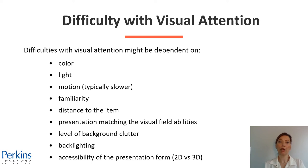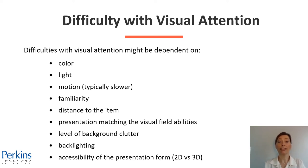Difficulties with visual attention might be dependent on color. Using preferred or highly saturated color items might help with visual attention skills. Light. Motion — typically, slower motion is easier for visual regard. Familiarity of the item or environment — familiar items are easier to direct visual attention to. Distance to the item — closer the presentation, easier the visual attention.